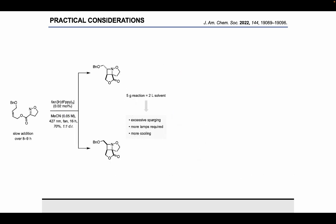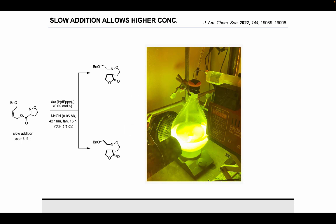The only problem with this is that it's just not really practical to run a multigram reaction at that low of a concentration. It requires a lot of solvent, leads to excessive sparging, more lamps, and the more lamps you have, typically the more cooling that you need to have. We weren't particularly excited about this, so we were actually able to overcome this by instead running the reaction five times as concentrated but using a slow addition of the substrate into a solution of photocatalyst. Just irradiating a solution of the photocatalyst, the substrate is added in over eight to nine hours, and then it's left to stir overnight. This gives us a 70% yield and a one-to-one mixture of two tricyclic diastereomeric products.